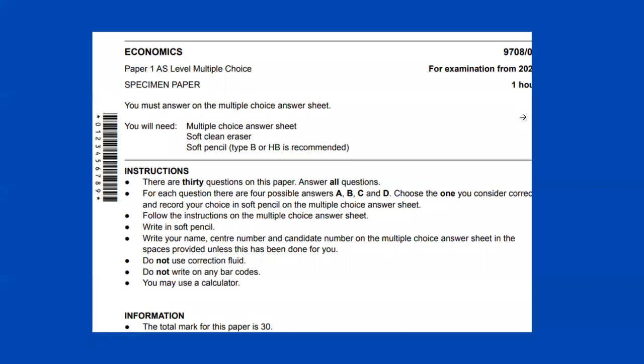This is the specimen paper from Cambridge. On the first page, there are all the guidelines. The one hour paper has MCQs. You will need a pencil to shade your multiple choice answer sheet, which is also called the bubble sheet. There are 30 questions in this paper with A, B, C, D options. Only one option is correct. Correction fluid should not be used, and the total marks for this paper is 30.